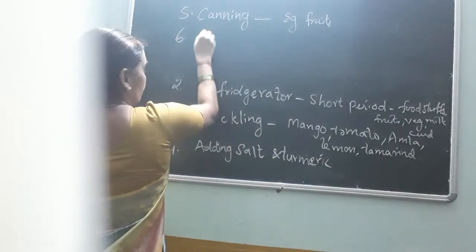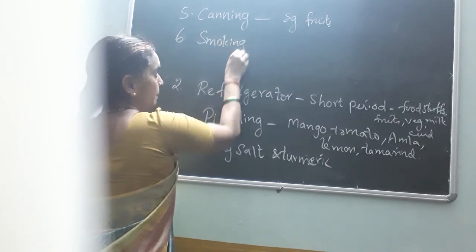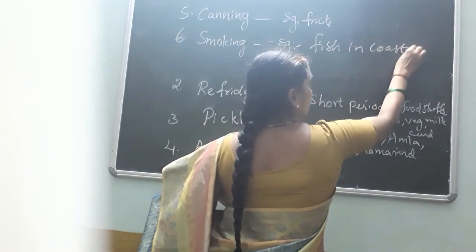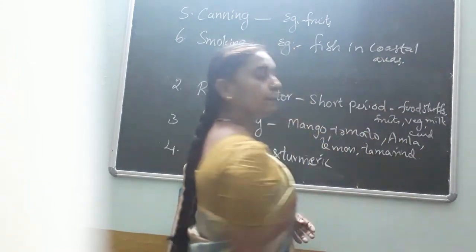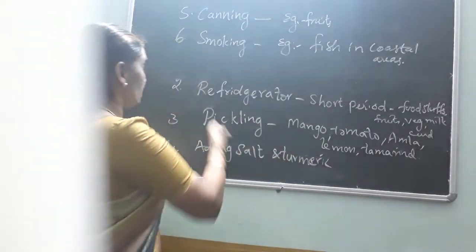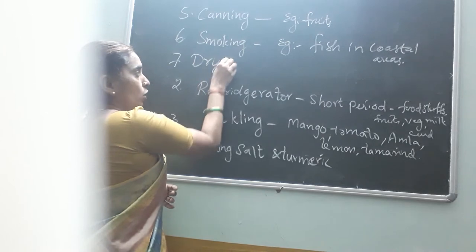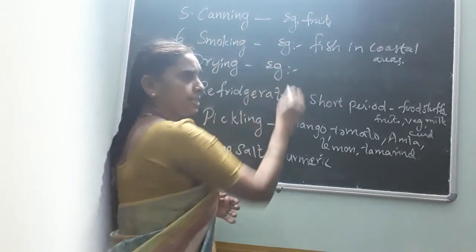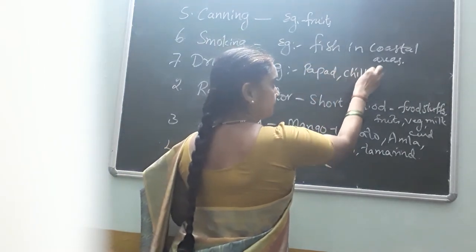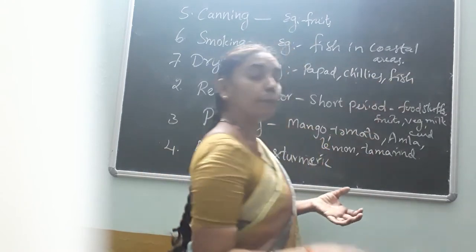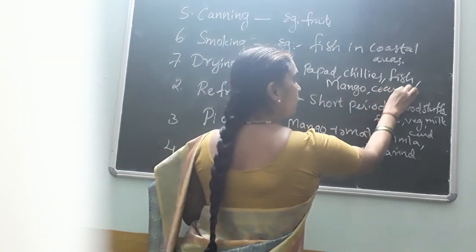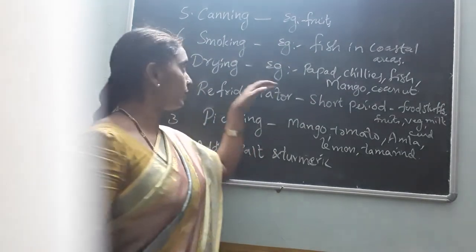The sixth method is smoking. Especially fish in coastal areas are preserved by the smoking process. This is also one of the methods of preservation. Next is drying. You can also dry some food items. Drying process examples include papad, chillies, fish, and mango amchur. Coconut — these are all used in food after drying.